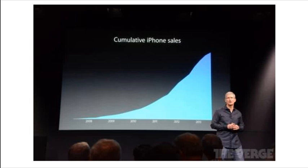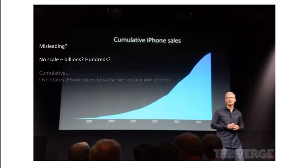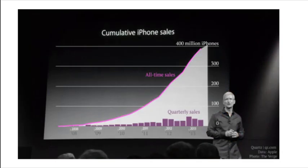First of all the chart has no scale — it could be showing billions or hundreds of iPhone sales. In addition, when we're talking about iPhones, it doesn't even account for people replacing older broken iPhones. With an overlay, we can see that although Apple can boast more than 400 million iPhones sold for all time, quarterly sales had actually declined over the last three quarters. The change in slope implies that iPhone sales continued to decline.